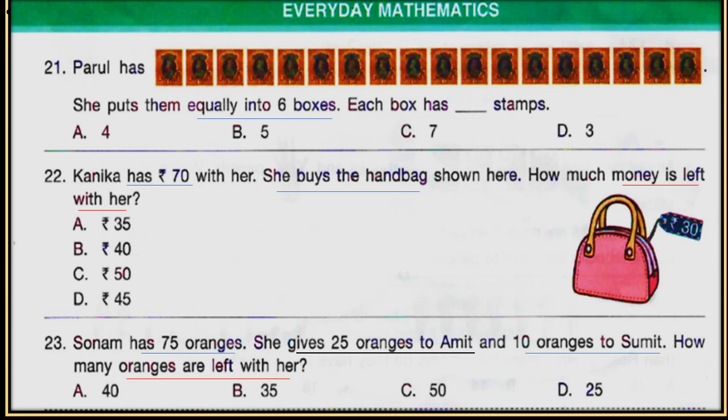Next question: Sonam has 75 oranges. She gave 25 oranges to Amit and 10 oranges to Sumit. How many oranges are left with her? Sonam has 75 oranges, she gave 25 to Amit and 10 to Sumit — calculate how many oranges are left with her.